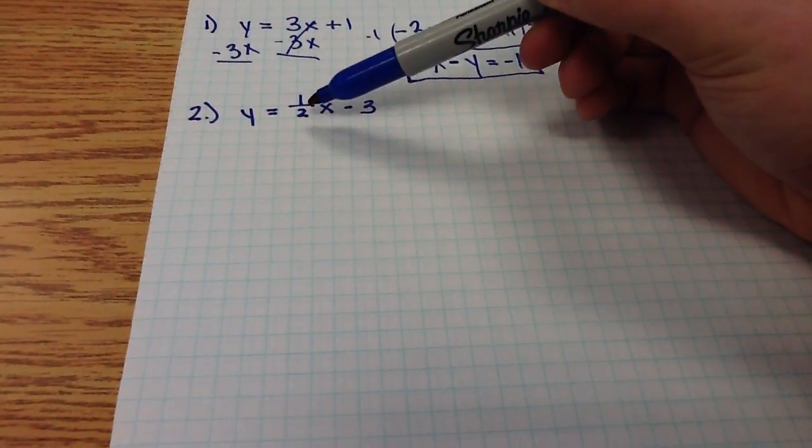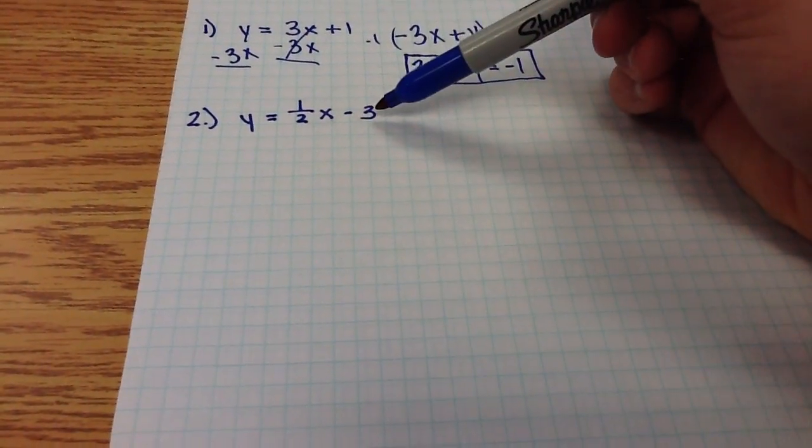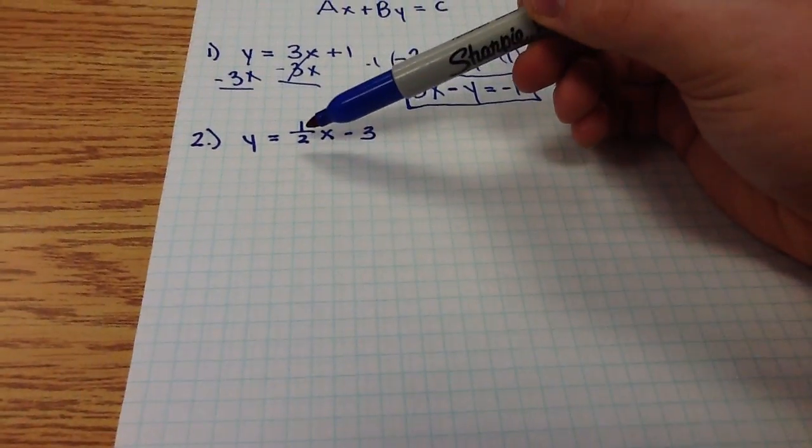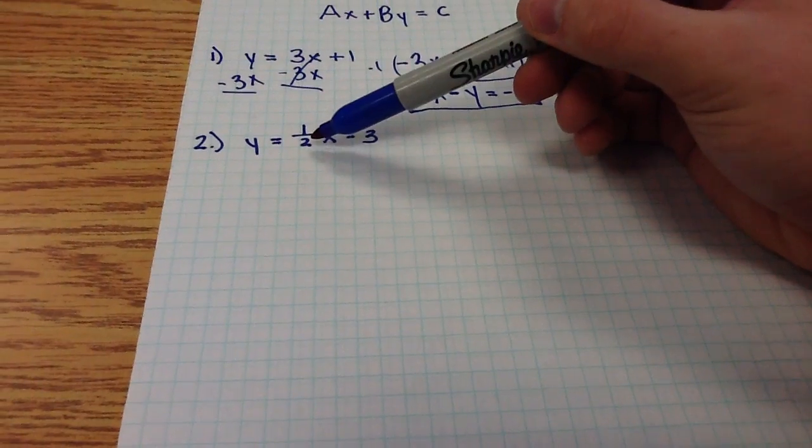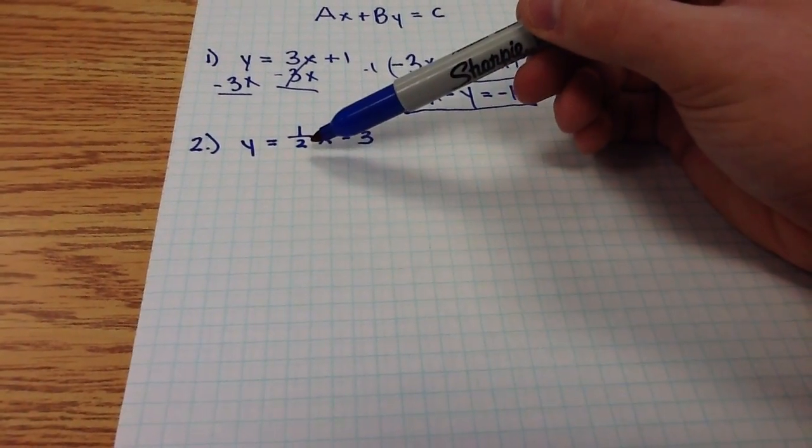Whatever the denominator is, here it's 2, multiply by it. If it were 4, I would multiply by 4. If it were 5, I would multiply by 5. Whatever this is, multiply by that denominator on both sides of the equation. So I'm going to multiply both sides by 2.